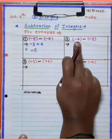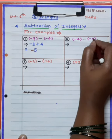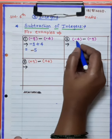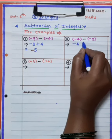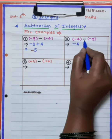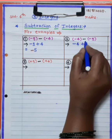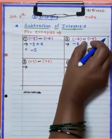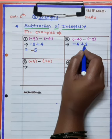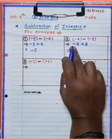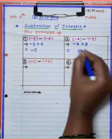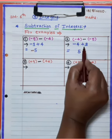The second example: minus 4 minus minus 9. Same procedure — minus 4 as it is, write down. Bracket minus 9: minus minus becomes plus, so minus 4 plus 9. You know minus plus minus means 9 minus 4 equals 5, and the sign of the bigger number 9 is plus, so the answer is plus 5.